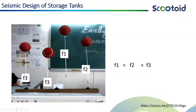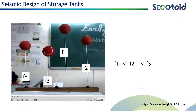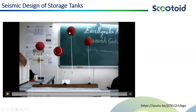We are trying to study what is the relation between the frequency of the equipment and the frequency of the table. If we are moving this table with a certain frequency, how do the different frequency equipment behave or respond to that frequency? So f1 is the lowest, f2 is more than f1, and f3 is more than both f1 and f2.